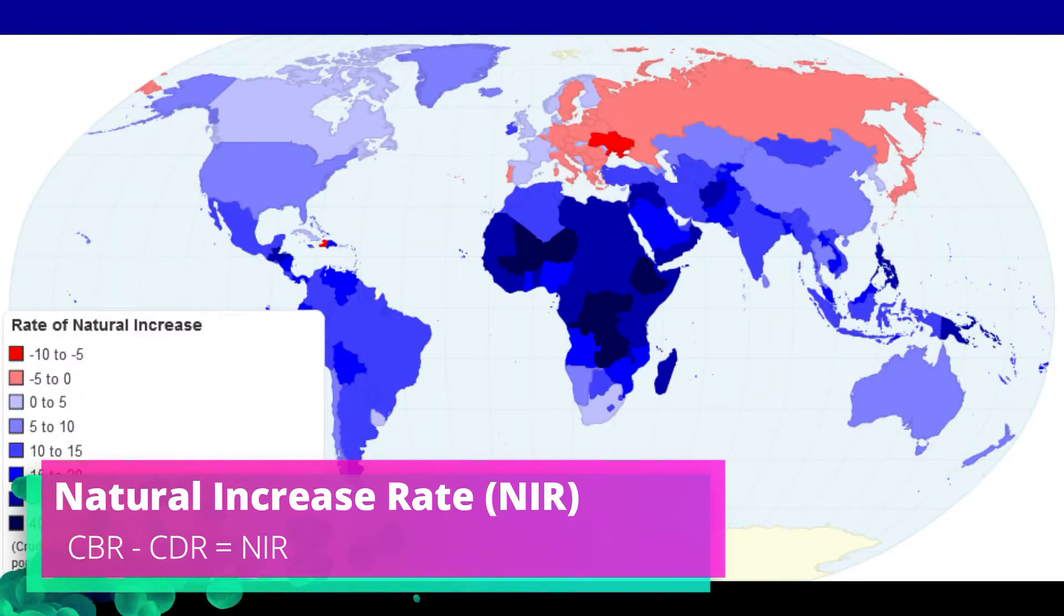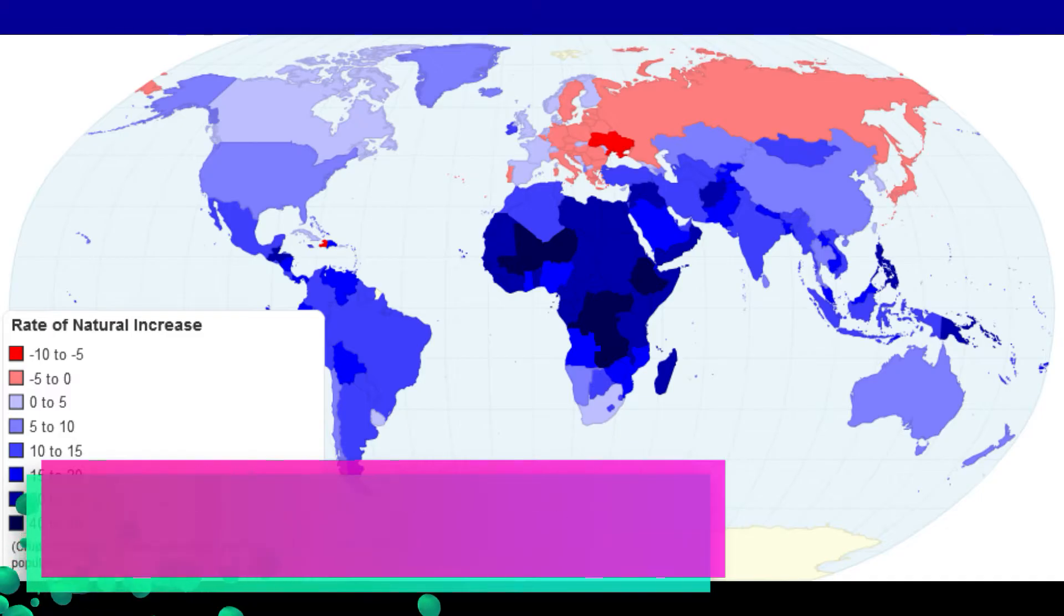Next we have our natural increase rate or NIR. Now sometimes this will also be shown to you as RNI which would stand for rate of natural increase. Now what we're talking about here is essentially how much is society growing. To find this we're going to take our CBR and we're going to minus our CDR. If this is a positive number it shows that our society is growing. If it is a negative number it shows our population is actually shrinking. Now I want to highlight that the NIR is only looking at natural births. So we're not factoring in immigration, emigration or migration. We're only looking at the natural births that are occurring in the country. So that's important to note because if a country has a negative NIR they still overall could be growing as a population if they have a lot of immigrants coming into the country.